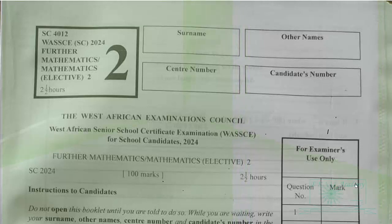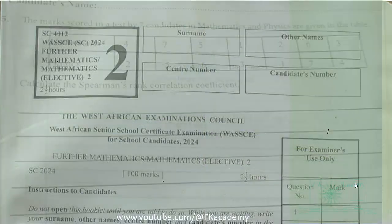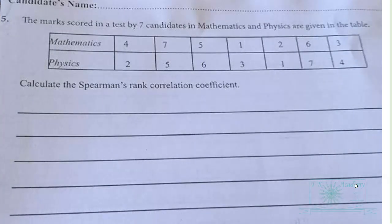WACI 2024 for school candidates elective mathematics paper 2. Here the question is on correlation coefficient. The marks scored in a test by seven candidates in mathematics and physics are given in the table. Calculate Spearman's rank correlation coefficient.